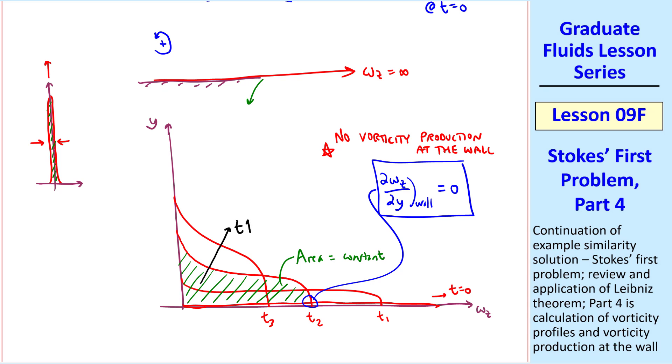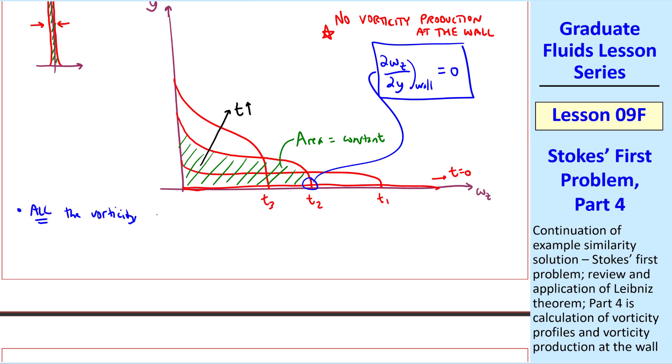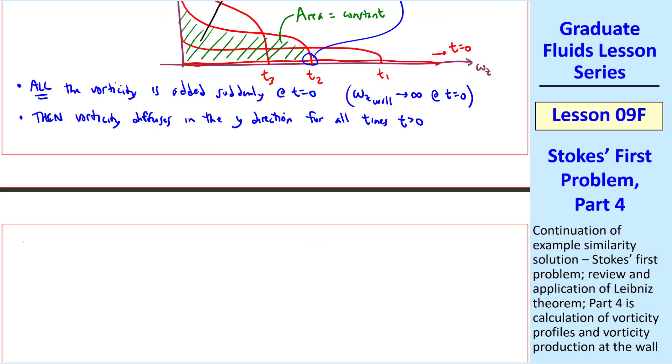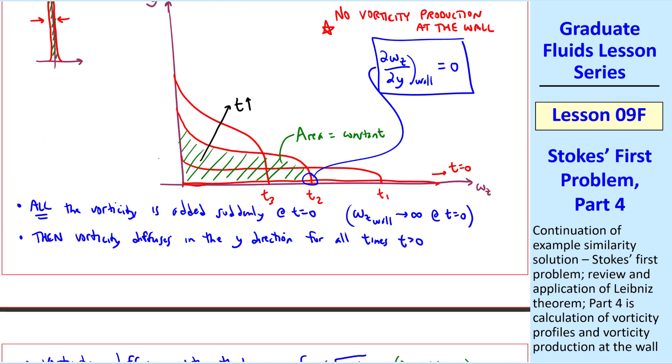Notice also that at any time, del omega z del y at the wall is zero. Which you may recall means there's no vorticity production at the wall. There is diffusion, of course, as time increases, so vorticity diffuses upwardly into the flow. But there's no vorticity production. So to answer Sean's question, all the vorticity is added suddenly, instantaneously, at t equals zero. And omega z wall is infinite at t equals zero. Then vorticity diffuses in the y direction, away from the wall, for all times greater than zero. It also turns out that vorticity diffuses with thickness delta proportional to square root of nu t, just like the u component of velocity diffuses from previous lessons. Where delta is some measure of the thickness, such as the 99% thickness, this would be delta t1, delta t2, and delta t3 on our diagram.